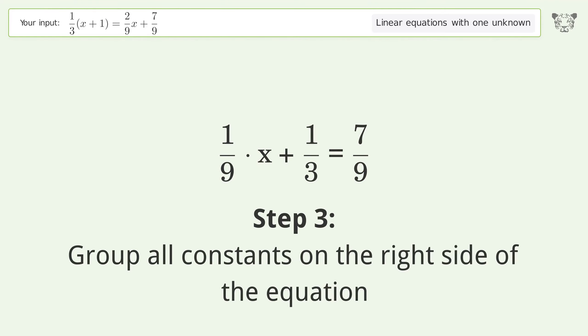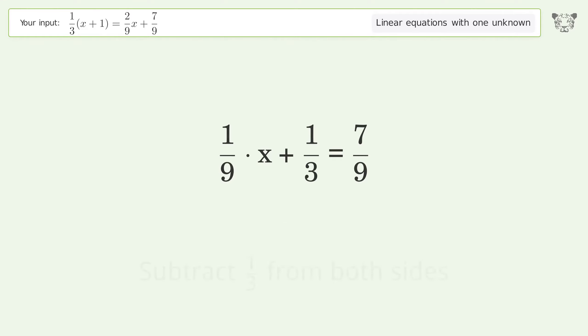Group all constants on the right side of the equation. Subtract 1 over 3 from both sides. Combine the fractions. Combine the numerators. Reduce the zero numerators. Simplify the arithmetic.